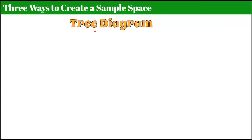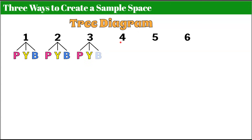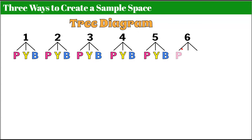Welcome back. Let's create our tree diagram — I'm actually going to show you three ways to create a sample space. Tree diagram: our first event was to roll our number cube, giving six different outcomes, numbers one through six. From there, we spin a spinner with three sections. So each number needs three branches: pink, yellow, and blue. Each of the six numbers — one through six — branches into pink, yellow, and blue. There's our tree diagram.